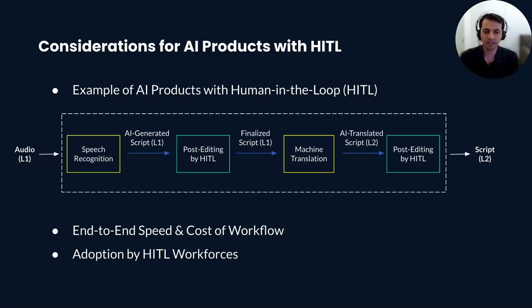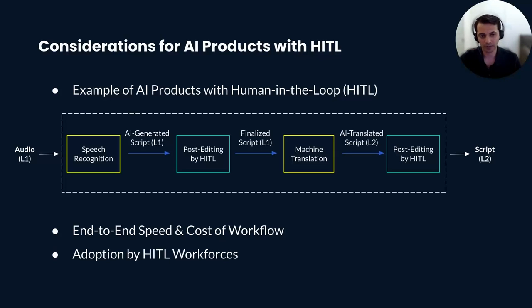Going through the workflow from left to right: with ASR, we transcribe the original audio. But the AI-generated script may not be 100% accurate, so it needs to be post-edited by transcribers — our first human in the loop. Then we go through machine translation to translate the post-edited English script to French, and before sending to end users, the translation must be post-edited by human translators — our second human in the loop.